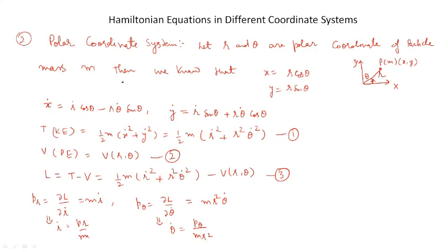Now Hamiltonian equations in the polar coordinate system. In polar coordinates, r and theta are the generalized coordinates of a particle in two-dimensional space, where x equal to r cos theta and y equal to r sin theta. Then x_dot equal to r_dot cos theta minus r theta_dot sin theta, and y_dot equal to r_dot sin theta plus r theta_dot cos theta. The kinetic energy is T equal to (1/2)m(r_dot² + r² theta_dot²). Let us say it is equation number 1.